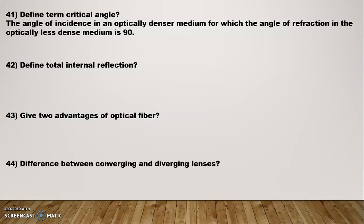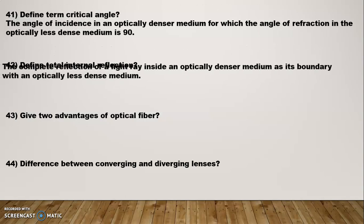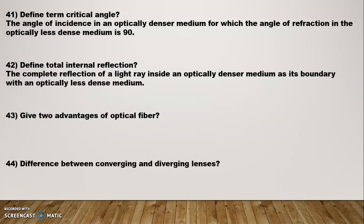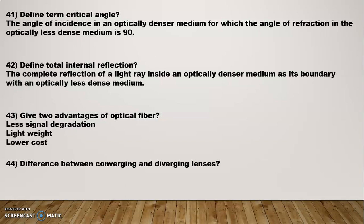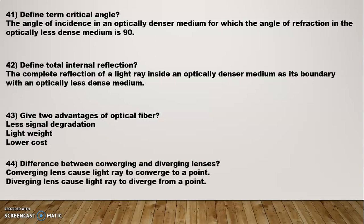Define total internal reflection: The complete reflection of light inside an optically denser medium at its boundary with an optically less dense medium — that is total internal reflection. Optical fiber advantage: less signal degradation means less signal drop, lightweight, and lower cost. Difference between converging and diverging lenses: converging lenses cause light rays to converge to a point; diverging lenses cause light rays to diverge from a point.